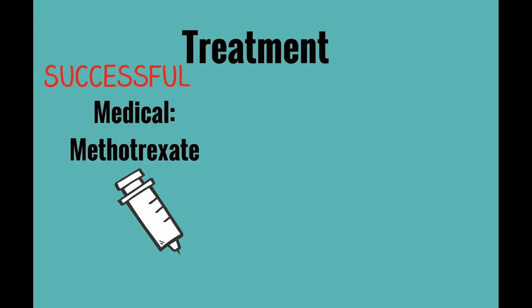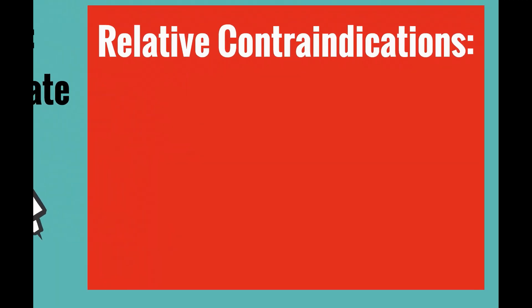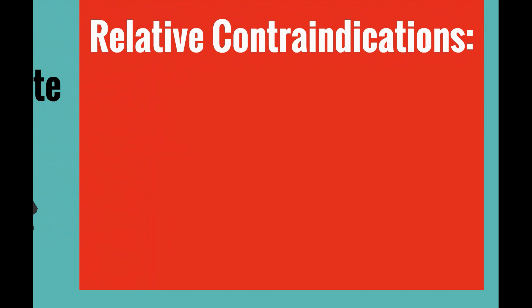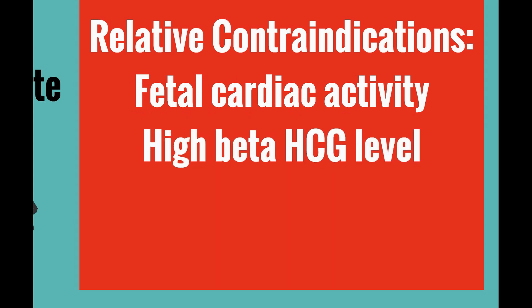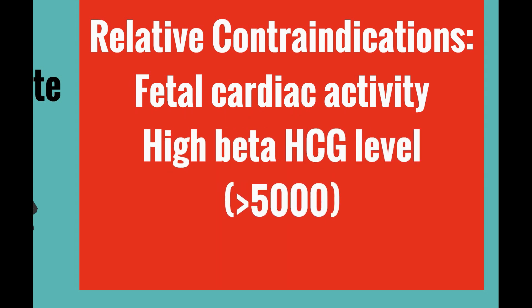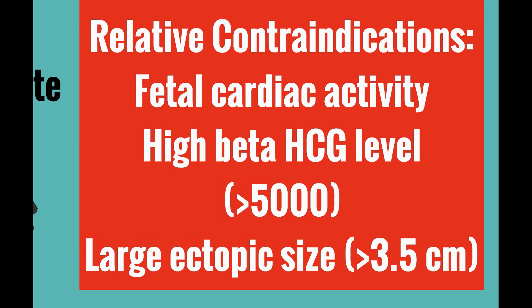If methotrexate therapy is not going to be successful and surgery is ultimately needed, then she is likely not the best candidate. Relative contraindications include fetal cardiac activity, high beta HCG level, and a large ectopic pregnancy size greater than 3.5 centimeters.